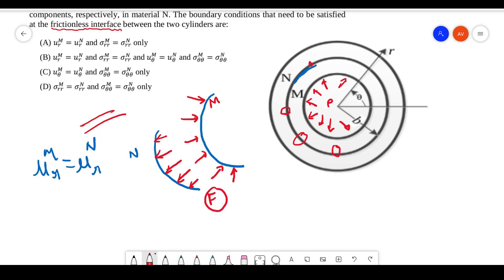The force value will be the same, and the area—that means your stresses are also going to be the same. So your σrr, that is radial stress for M and N, is going to be the same. So this is the second condition that we have got: σrr^M = σrr^N.